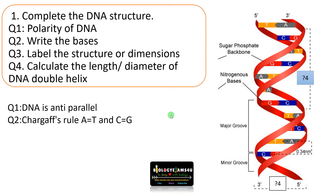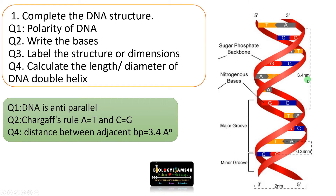Then calculate the length and diameter of the DNA double helix. The distance between adjacent base pairs is 0.34 nanometers. So what will be the length of a turn? A turn of DNA is made up of 10 base pairs, so it will be 0.34 into 10, that is 3.4 nanometers. In angstroms, the distance between adjacent base pairs is 3.4 angstroms, so a turn made up of 10 base pairs will be 34 angstroms.